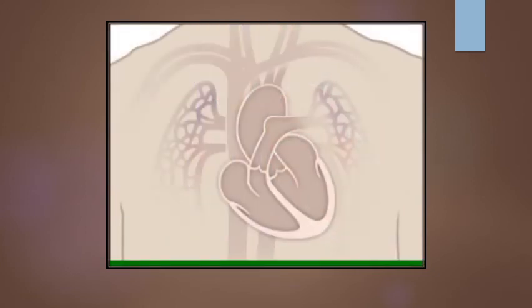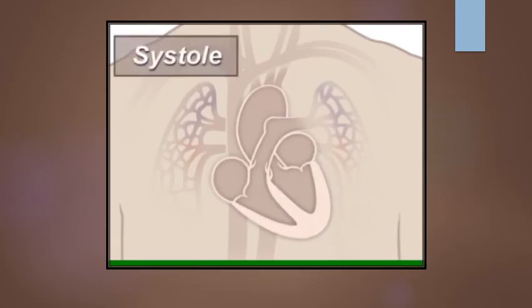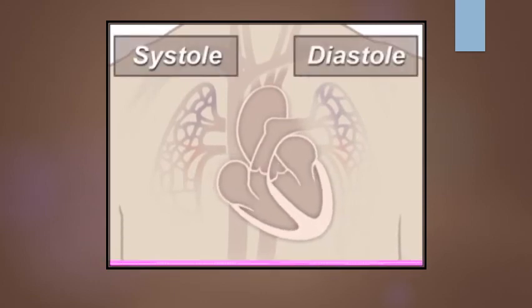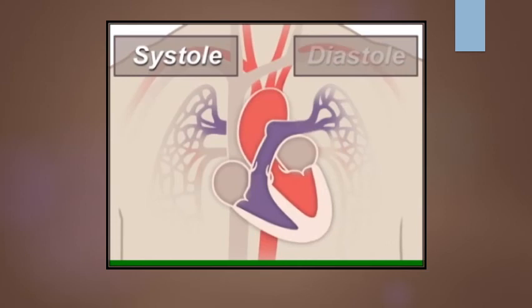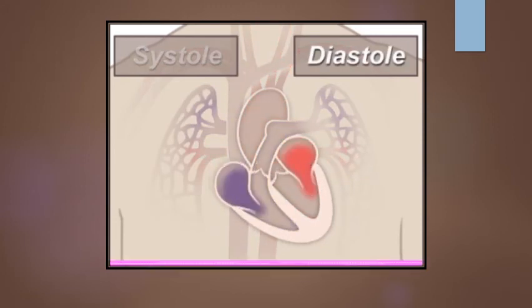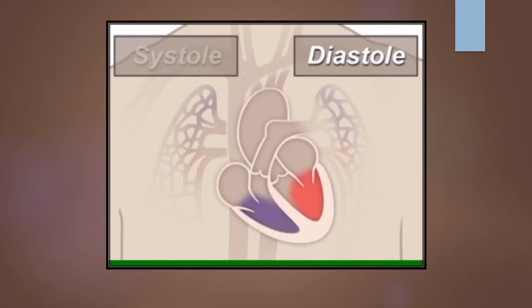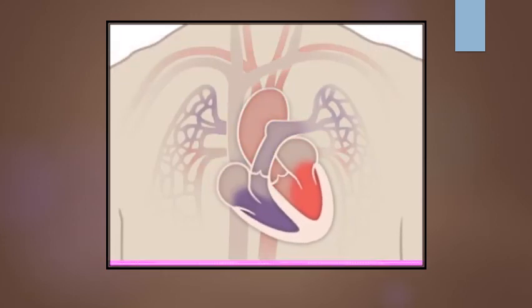A beating heart contracts and relaxes. Contraction is called systole and relaxing is called diastole. During systole, your ventricles contract, forcing blood into the vessels going to your lungs and body, much like ketchup being forced out of a squeeze bottle. The right ventricle contracts a little bit before the left ventricle does. Your ventricles then relax during diastole and are filled with blood coming from the upper chambers, the left and right atria. Then the cycle starts over again.